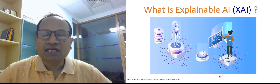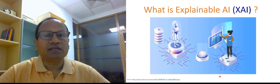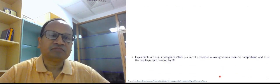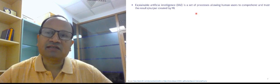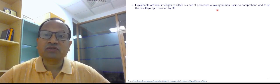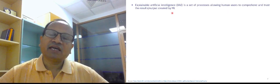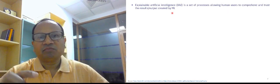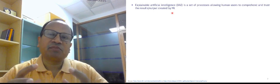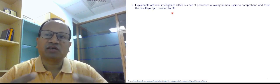So in this lecture, let us understand what is explainable artificial intelligence, XAI. Explainable artificial intelligence is a set of processes or methods that allows human users to comprehend and trust the results and output created by machine learning. There are ML models which are used to create some result, some outcome.